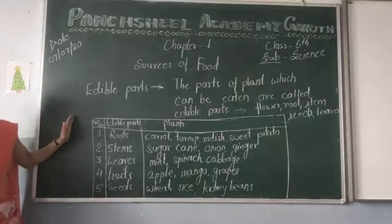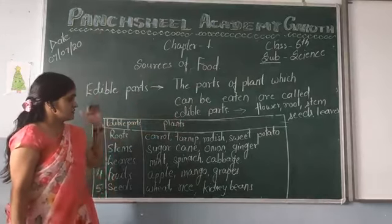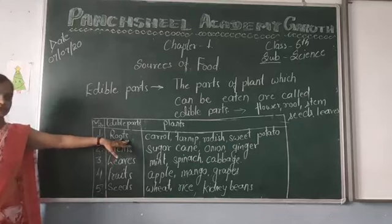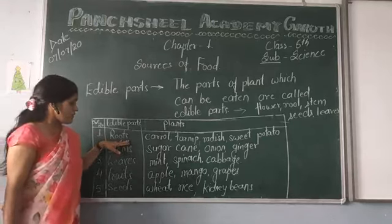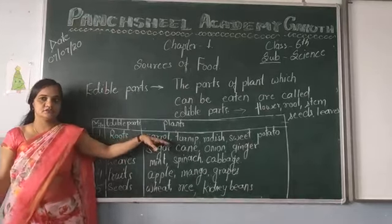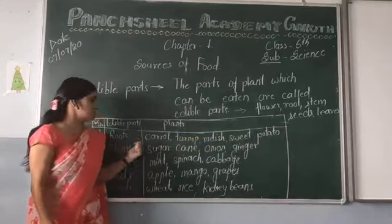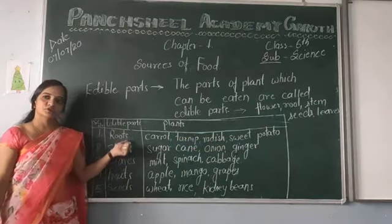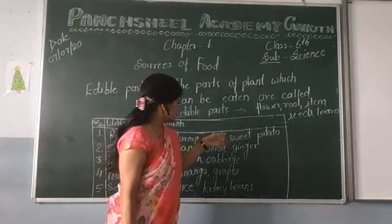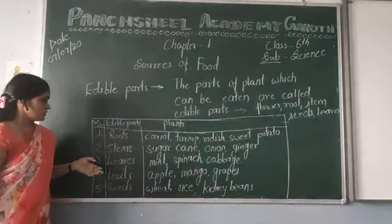Here a table is given showing edible parts and the plants whose parts are edible. First, roots: we eat the roots of carrot, turnip, radish, sweet potato. These are plants whose roots we eat — carrot, radish, and sweet potato are examples.